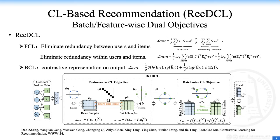So, we propose RecDCL. Firstly, RecDCL optimizes the FCL by eliminating redundancy between users and items, within users and items. On the other hand, as a BCL dimension, we design basic BCL and advanced BCL to enhance the robustness of the representations.